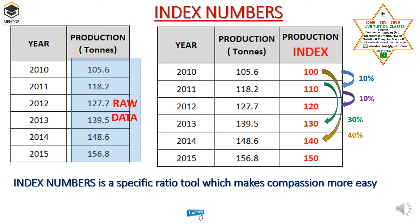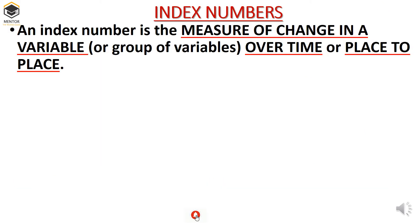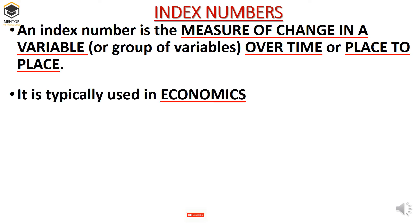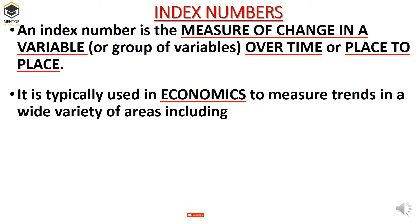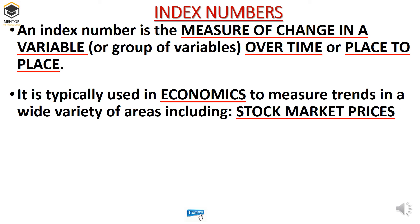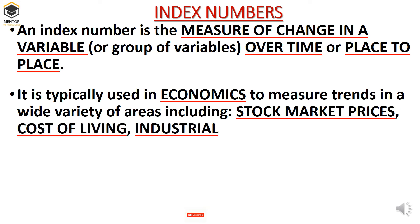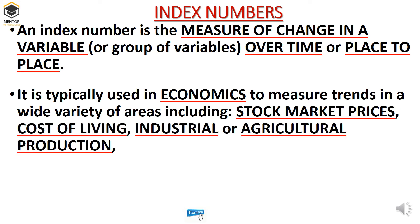So let's see the definition part. An index number is a measure of change in a variable — as in our example, the production variable. Index number measures a change in a variable or a group of variables over a time or a place. It is typically used in economics to measure trends in a wide variety of areas including stock market prices, cost of living, and industrial or agricultural production.